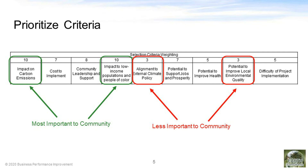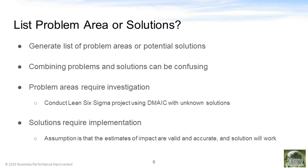We encourage you to use all the stakeholders involved to help define the ranking of these criteria. One question that comes up is whether you should be listing problem areas or solutions to implement. If you combine both problems and solutions together, it can be confusing, as the solutions already have some implied return on investment or impact and are more exciting to work on, while problems don't have that well defined yet and often get left behind in the scoring. When you list just a problem area, that means you're going to require some investigation into what the best solution will be. This is often how we use Lean and Six Sigma projects, using the DMAIC model to determine what the best solutions will be.